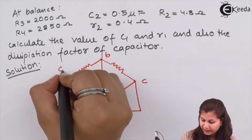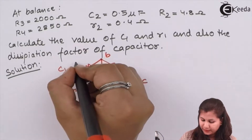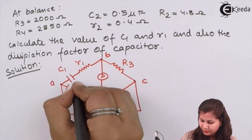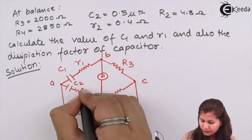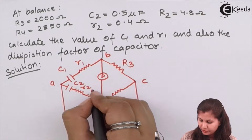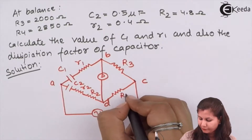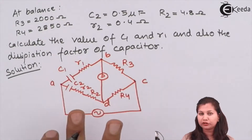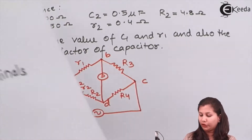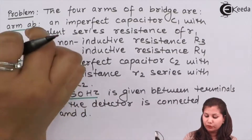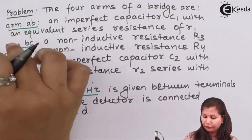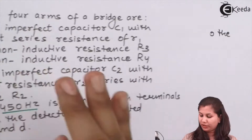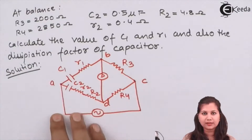So we have C1, small r1, R3, C2, small r2, capital R2, and R4 labeled in the circuit. This is the circuit for the bridge given to us in the problem. We have used the information of the four arms to draw the circuit.